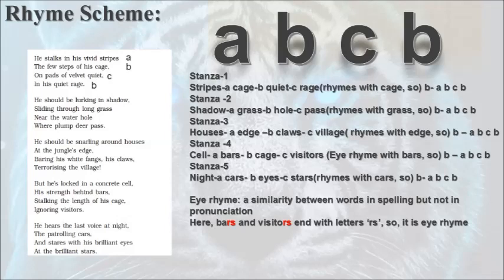In the same way, let's analyze stanza 2. 'Shadow' is named A, 'grass' as B, 'hole' as C, and 'pass' — as it rhymes with 'grass' — is B again. So the rhyme scheme of stanza 2 is ABCB again.